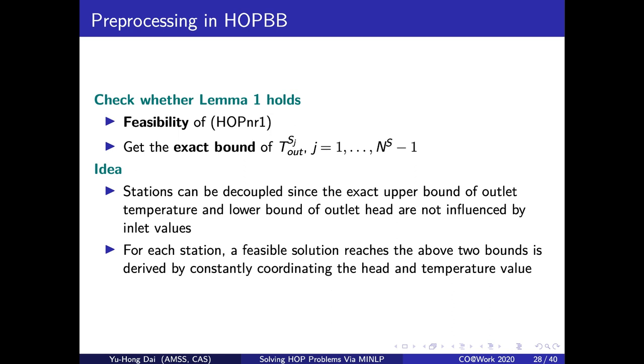To complete the HOPBB method, we need to design a pre-processing procedure to guarantee the equivalence conditions, that is, the feasibility of the non-convex relaxation and the exactness of the temperature upper bound. The idea is decoupling stations according to the special problem structure, that is, the exact upper bound of the outlet temperature and the lower bound of the outlet head are not influenced by the inlet values. And for each station, a feasible solution reaches the above two bounds is derived by constantly coordinating the head and temperature values.